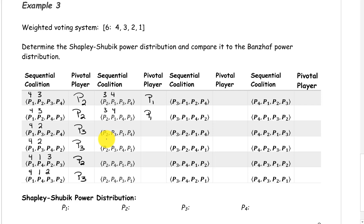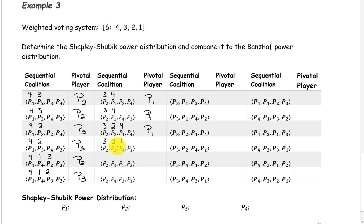The sequential coalition with players 2, 3, 1, and 4: Player 2 has a weight of 3. Player 3 has a weight of 2. This is only 5, so we haven't met quota. We add in player 1 with a weight of 4, giving a total of 9, meeting quota. So player 1 is our pivotal player. The sequential coalition with players 2, 3, 4, and 1: Player 2 has a weight of 3. Player 3 has a weight of 2. This is only 5, which doesn't meet quota. We add in player 4 with a weight of 1, giving a total of 6, which meets quota. So player 4 is our pivotal player.